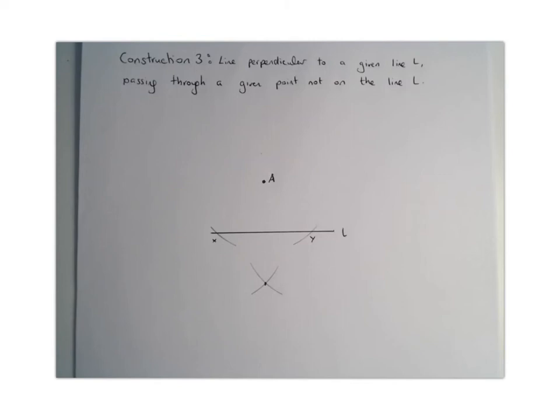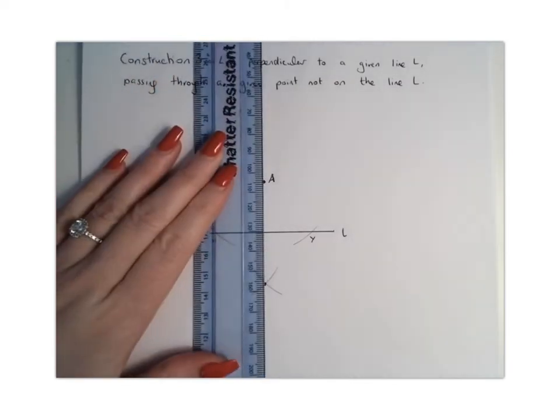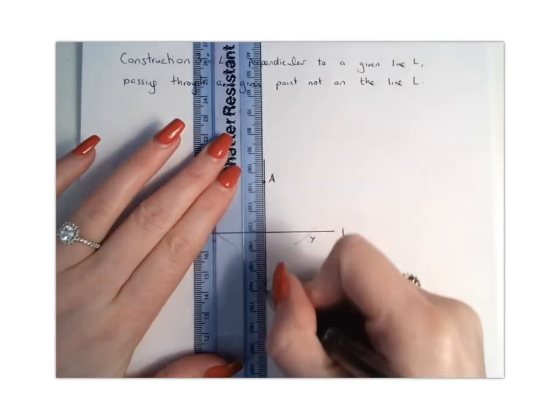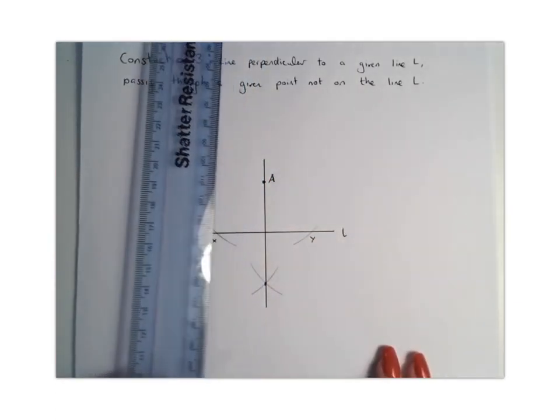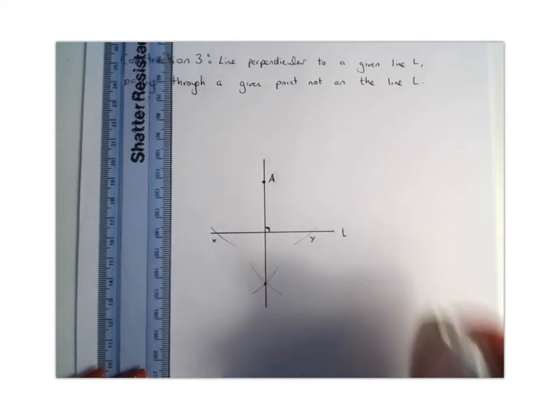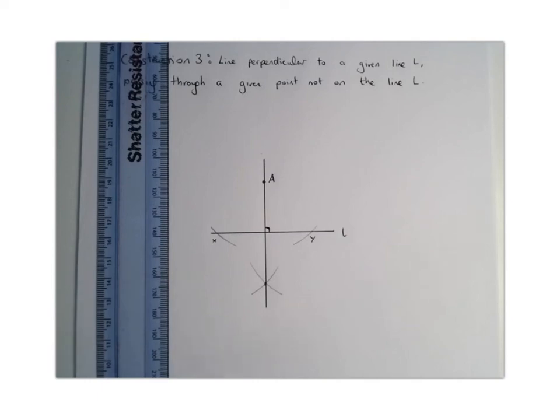and then from that and your point A, you're going to connect those together, and you will have found the perpendicular line that goes through the point A, which is perpendicular to your line.